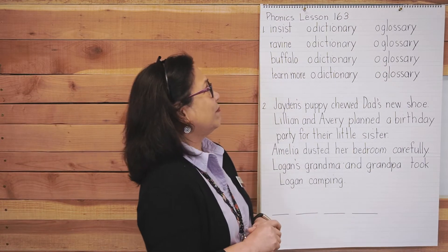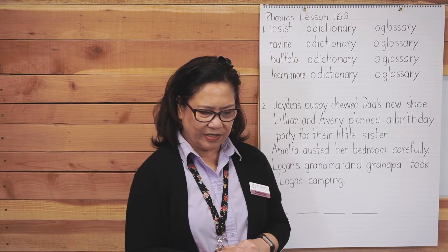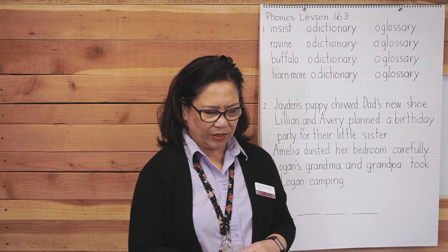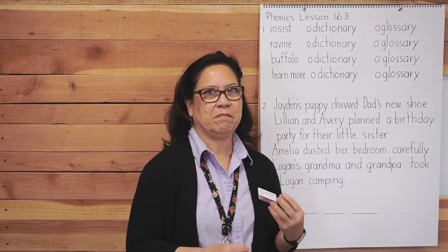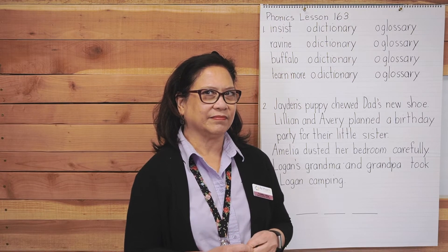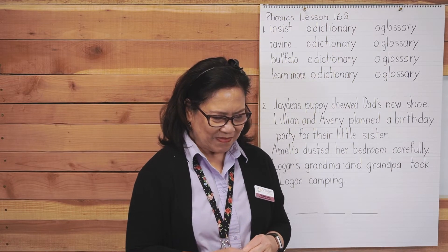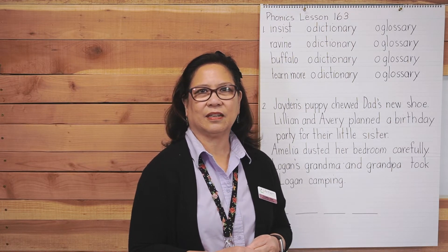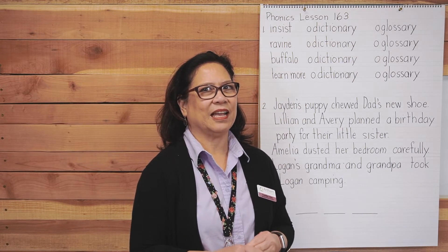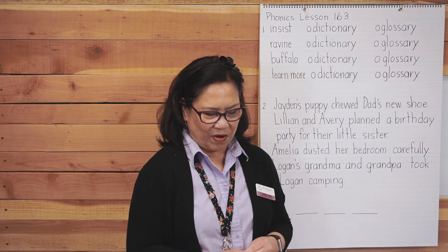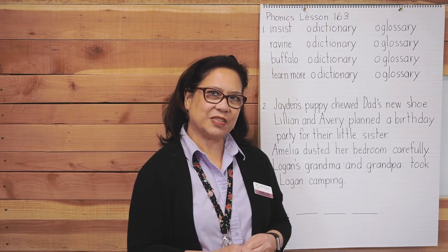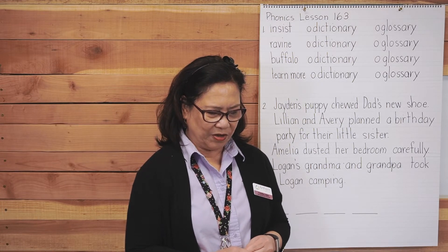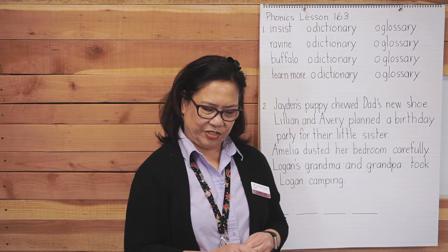Now listen carefully. For number one, it says read the sentences. Color the circle next to the word that tells where you should look. The first question says: you want to know what the word 'insist' means. Will you check the dictionary or the glossary? Mark your answer. Next, you need to know if the word 'ravine' is a noun. Will you look in the glossary or a dictionary? Mark your answer. You want to learn more about buffalo. Will you use a dictionary or a glossary? And the last one: you want to learn more about something you read in a book. Will you use a dictionary or a glossary?